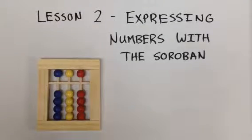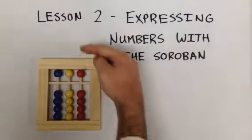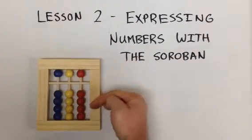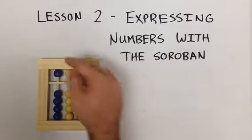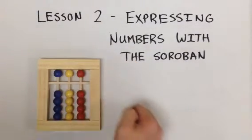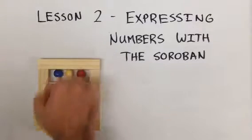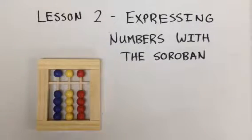Quickly to review: the red represents the units or the ones, the yellow column represents the tens, and the blue represents the hundreds.